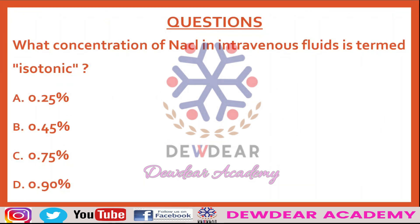What concentration of NaCl in intravenous fluids is termed isotonic? Options are 0.25%, 0.45%, 0.75%, 0.90%. The right answer is 0.90%. Isotonic sodium chloride solution is an aqueous solution of 0.9% NaCl.